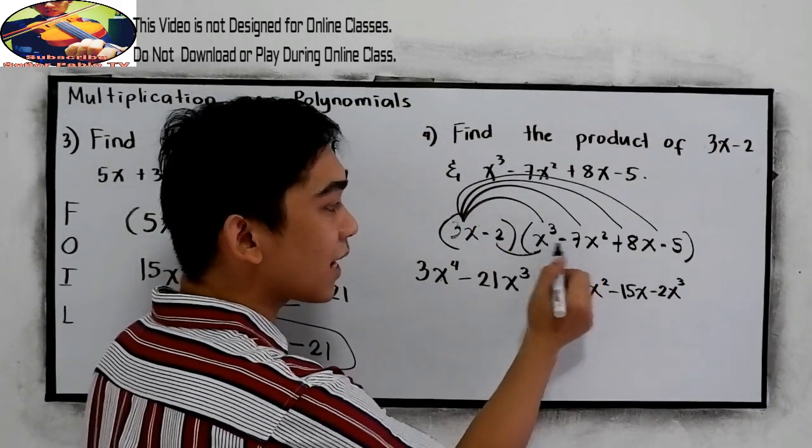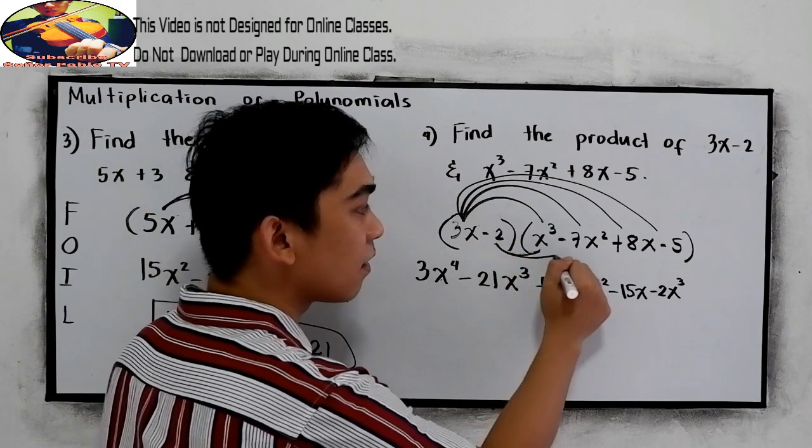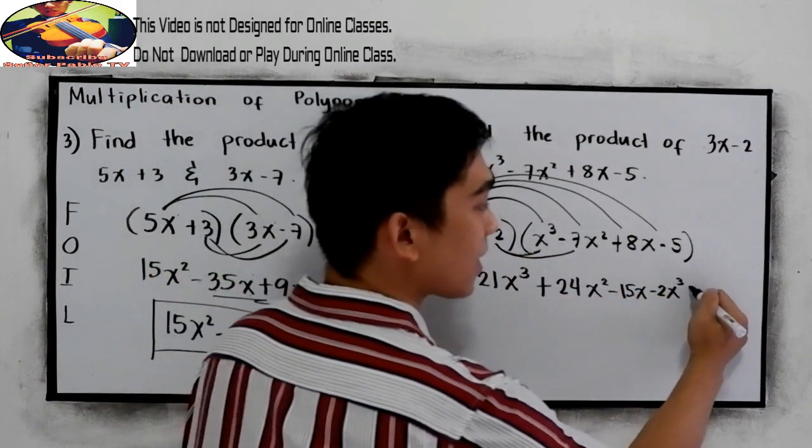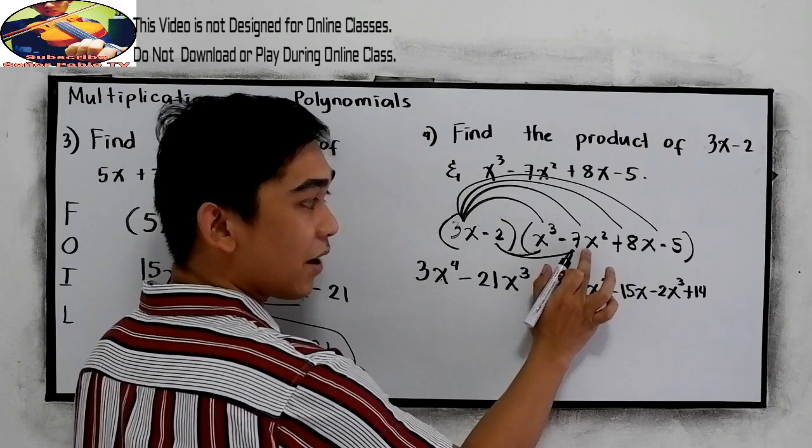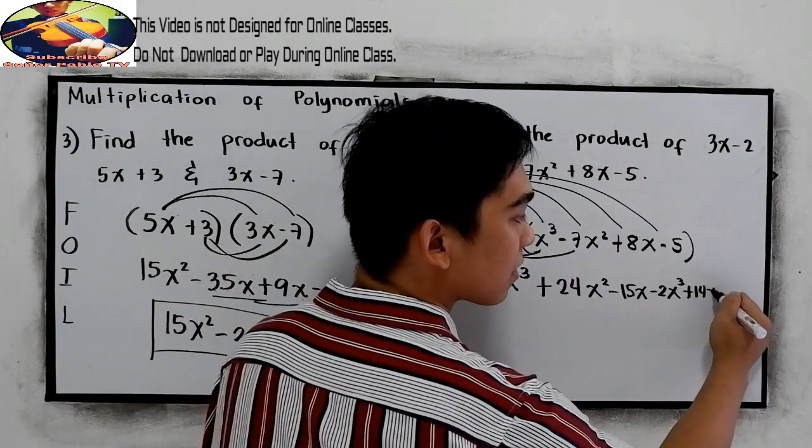Negative 2 times negative 7. So negative times negative is positive. So that is positive 14. Notice that we have x squared. So copy x squared.